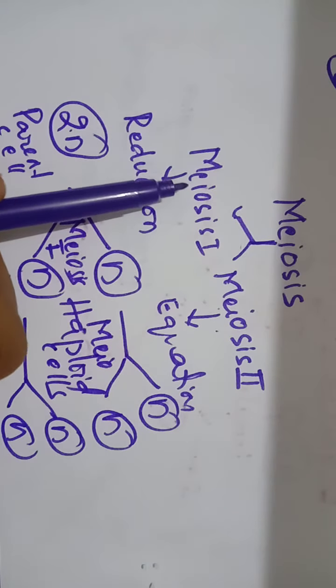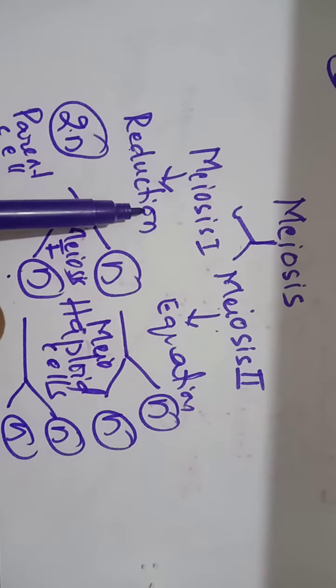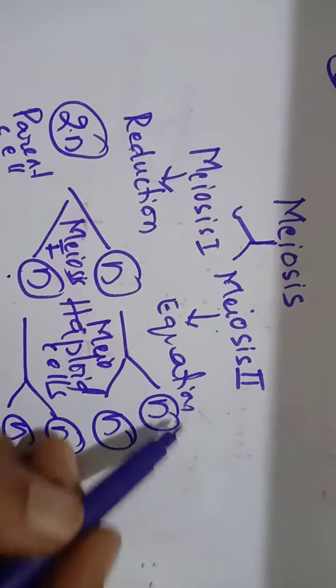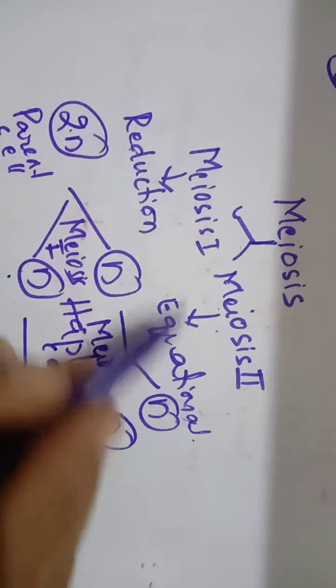Meiosis 1 is where actual reduction in the chromosome number occurs. Meiosis 2 is equational division. I will just explain.